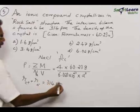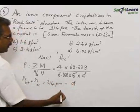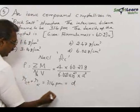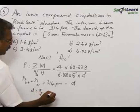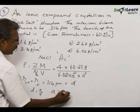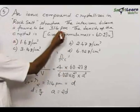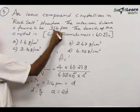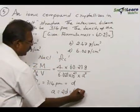In sodium chloride, the inter-ionic distance equals the interplanar distance d, and d = a/2, so a = 2d. Therefore, a = 2 × 314 pm = 628 pm.